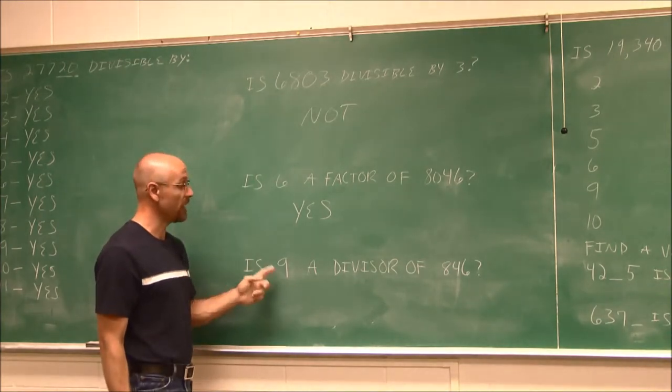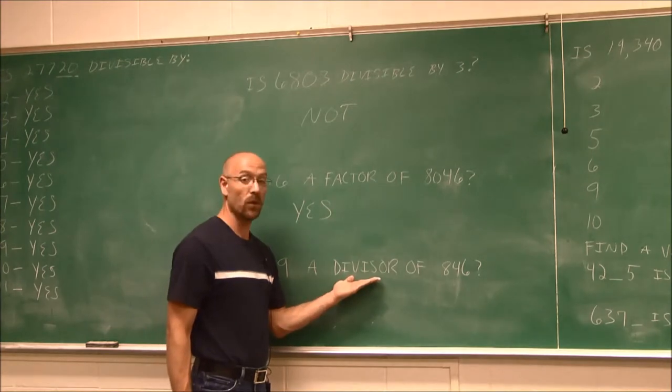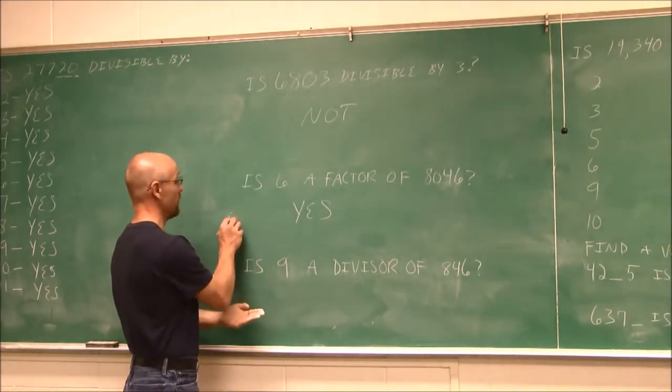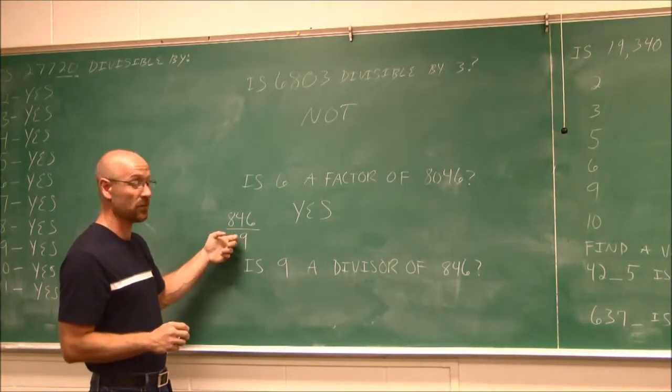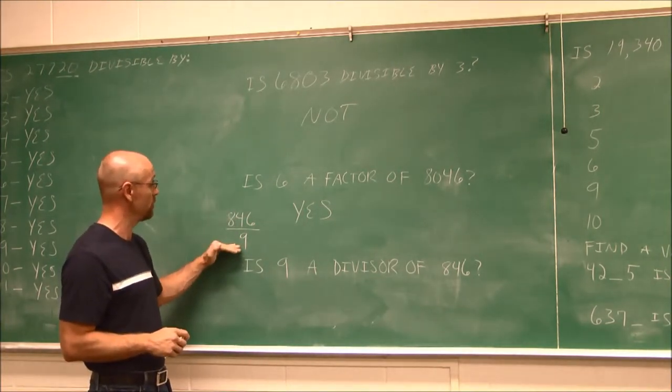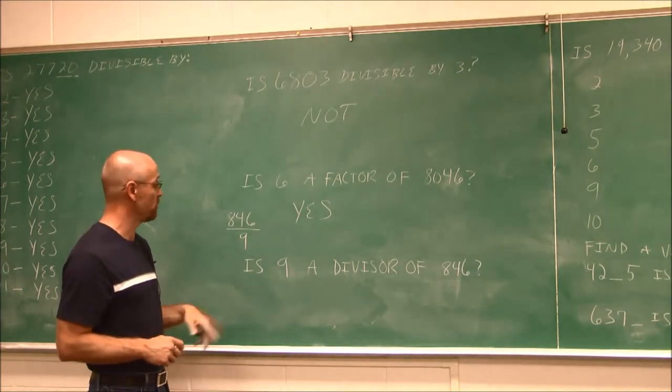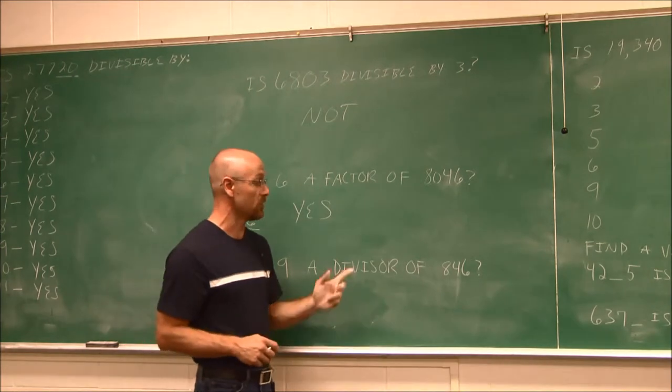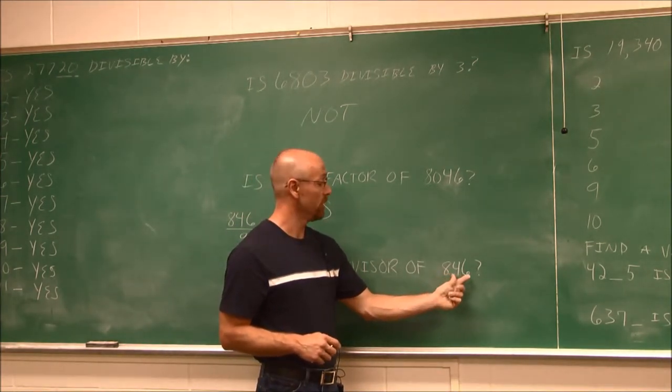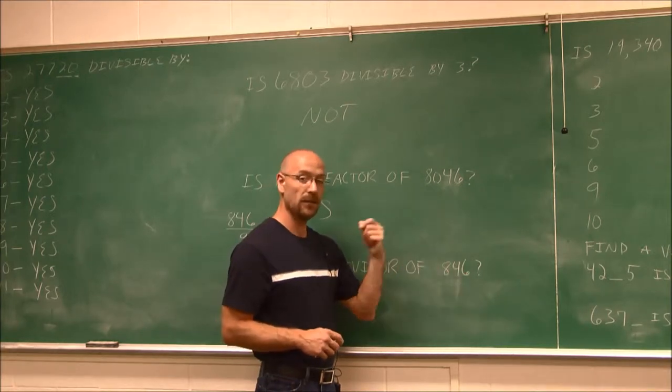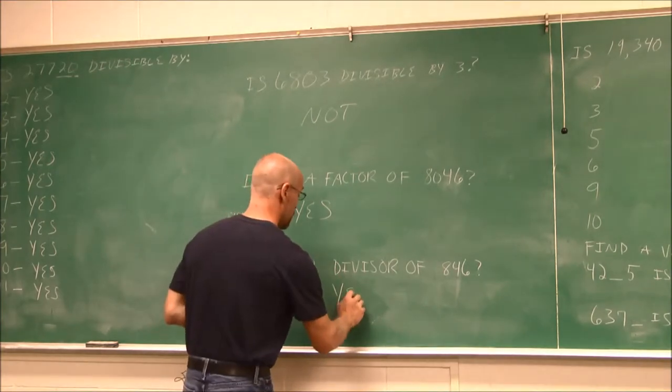This question here says, is 9 a divisor of 8,046? A new word. Essentially, what it's saying when we talk about divisors is it's different terminology. 9 is the divisor. If we were looking at it in this form, the 9 would be in the denominator. So we want to know if it's divisible by 9. Well, our rule of 9, similar to that of 3, is we just sum them up. 8 and 4 is 12, plus 6 is 18. 18 is divisible by 9, so that number must be divisible by 9.